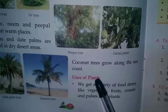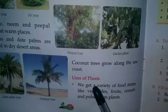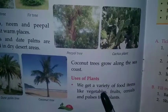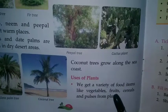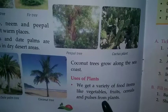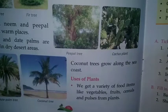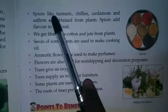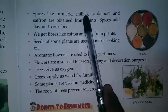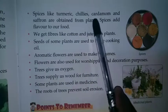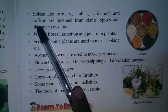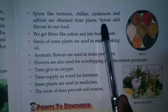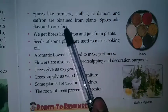Uses of Plants. We get a variety of food items like vegetables, fruits, cereals and pulses from plants. Spices like turmeric, chilies, cardamom and saffron are obtained from plants. Spices add flavour to our food.